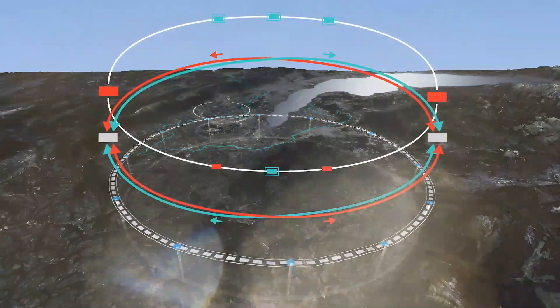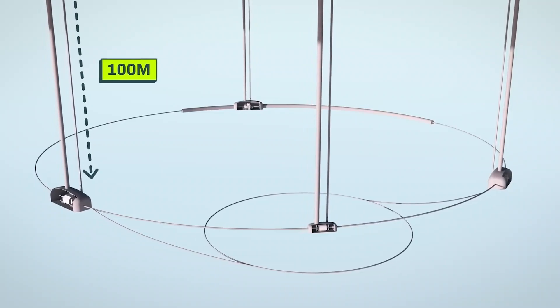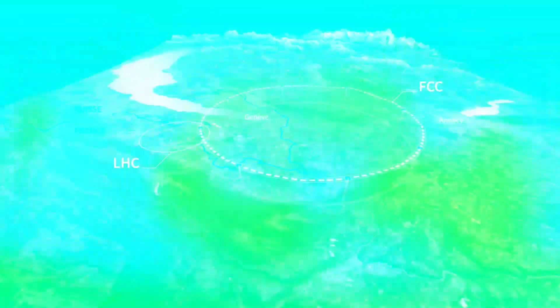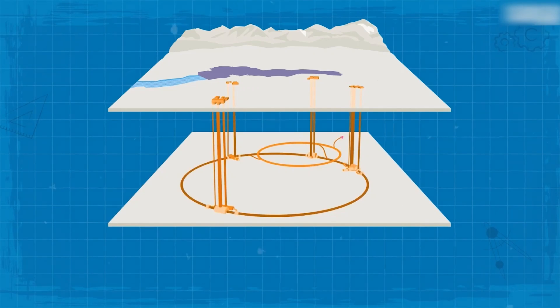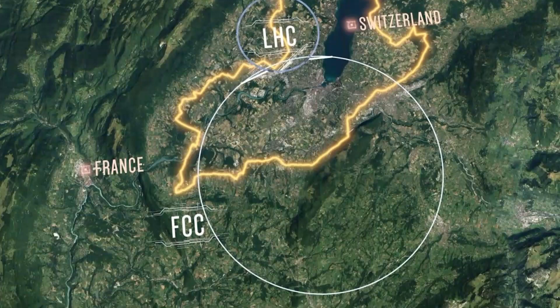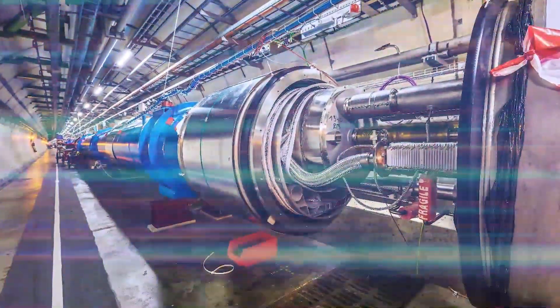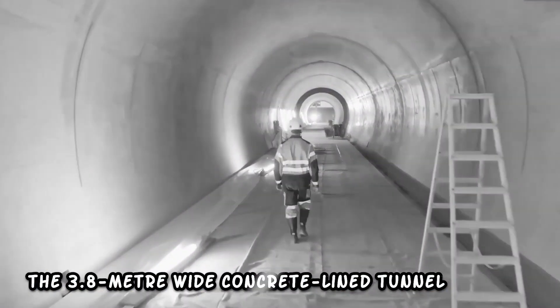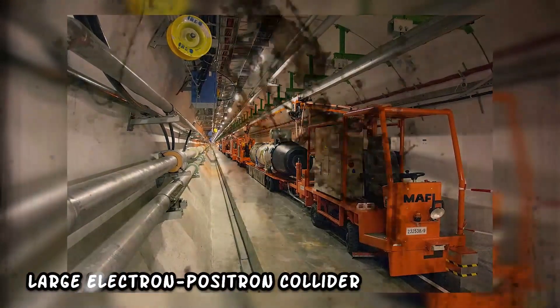Design: The collider is contained in a circular tunnel with a circumference of 26.7 kilometers, at a depth ranging from 50 to 175 meters underground. The variation in depth was deliberate, to reduce the amount of tunnel that lies under the Jura Mountains, to avoid having to excavate a vertical access shaft there. A tunnel was chosen to avoid having to purchase expensive land on the surface, and to take advantage of the shielding against background radiation that the Earth's crust provides. The 3.8-meter-wide concrete line tunnel, constructed between 1983 and 1988, was formerly used to house the Large Electron-Positron Collider.